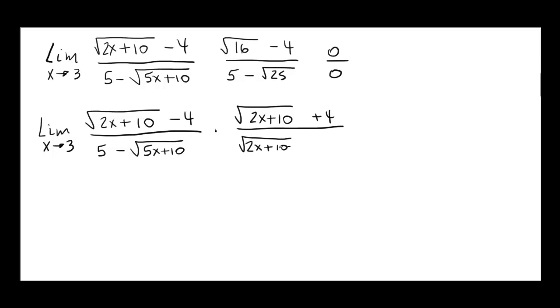Then the conjugate of the denominator is 5 plus the square root of 5x plus 10 and again we have to divide it by itself. So in the denominator we put 5 plus the square root of 5x plus 10.